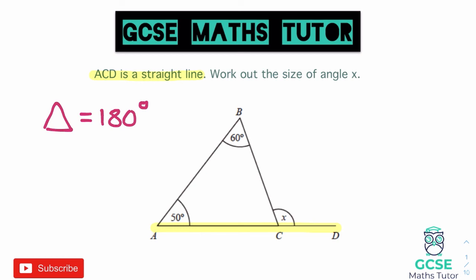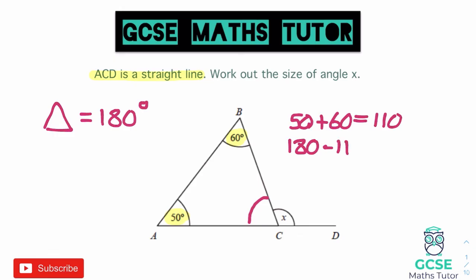If we start off by finding the missing angle in the triangle, we can figure that out by looking at the other two. We've got an angle of 60 and an angle of 50. If we add those together, 50 plus 60 equals 110 degrees. We know that the angles in the triangle add up to 180, so to find the missing angle we do 180 take away 110, which leaves us with a remaining angle of 70 degrees.